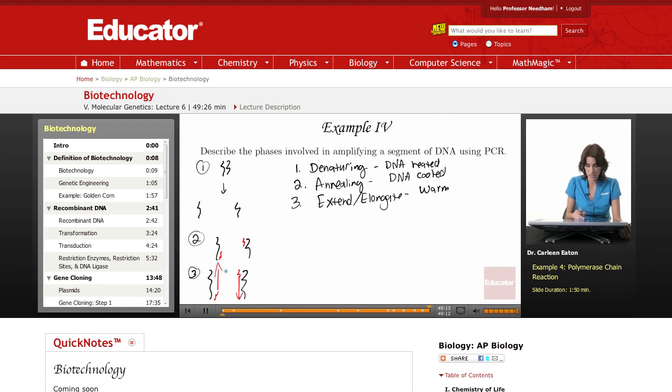So denaturing, annealing, and extending or elongating - those are the three major phases of PCR. That concludes this lesson on biotechnology here at educator.com.